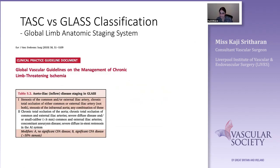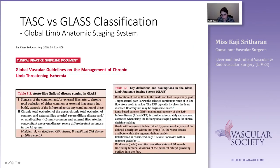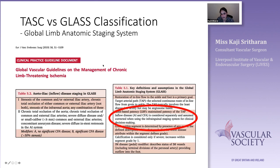Where does iliac disease fall into GLASS? Iliac disease is mentioned in GLASS staging as either stage 1 or stage 2. Importantly, it's the infra-popliteal and femoro-popliteal segments that play the greatest role in establishing GLASS grade. The guidelines simply state that you should be correcting inflow disease both at the aorto-iliac and at the CFA level.